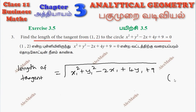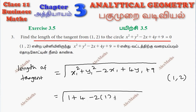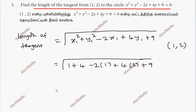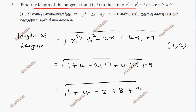We are given the point, that is (1, 2), at the foot of the tangent. Substitute x1, y1 as 1 and 2. So root of 1 plus 4 minus 2 into 1 plus 4 into 2 plus 9. Simplification: root of 1 plus 4 minus 2 plus 8 plus 9.